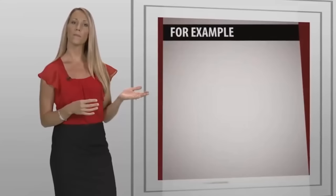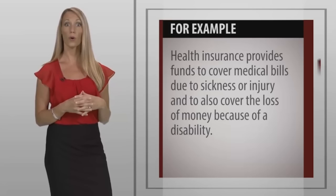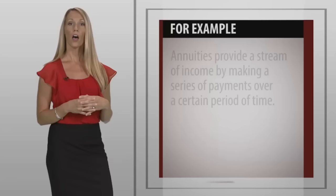For example, life insurance guarantees a specific sum of money when someone dies. Health insurance provides funds to cover medical bills due to sickness or injury and to also cover the loss of money because of a disability. Annuities provide a stream of income by making a series of payments over a certain period of time.